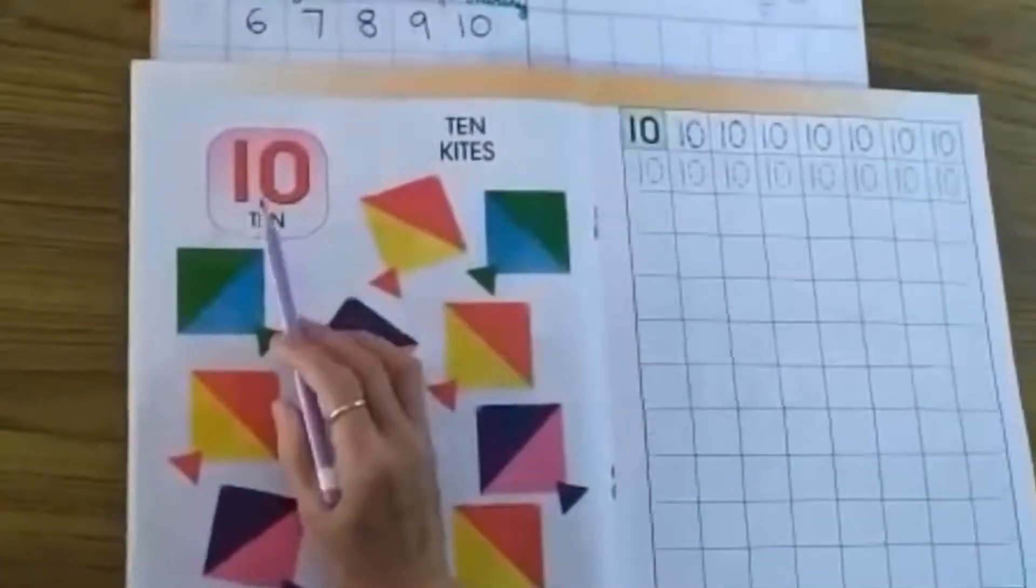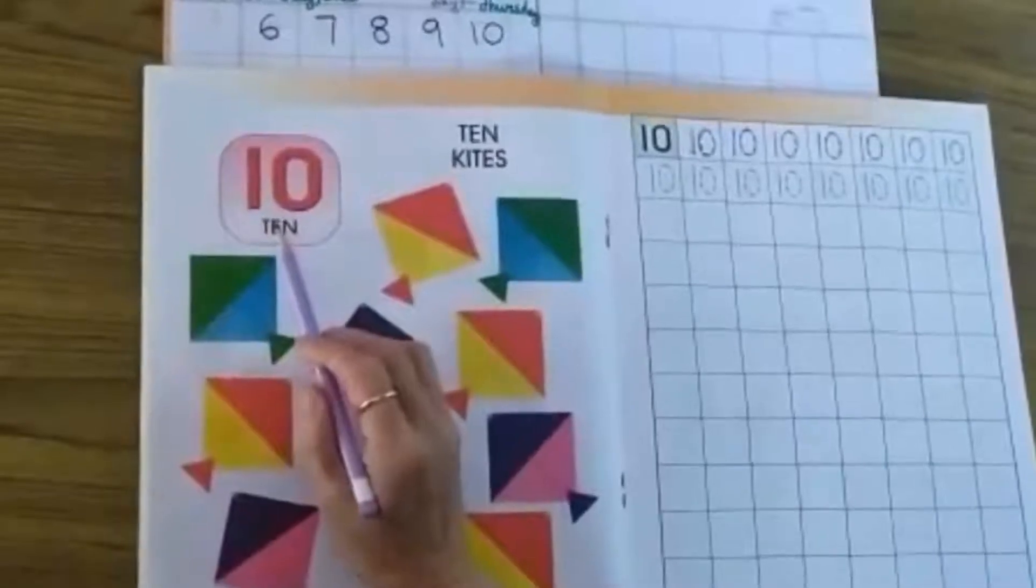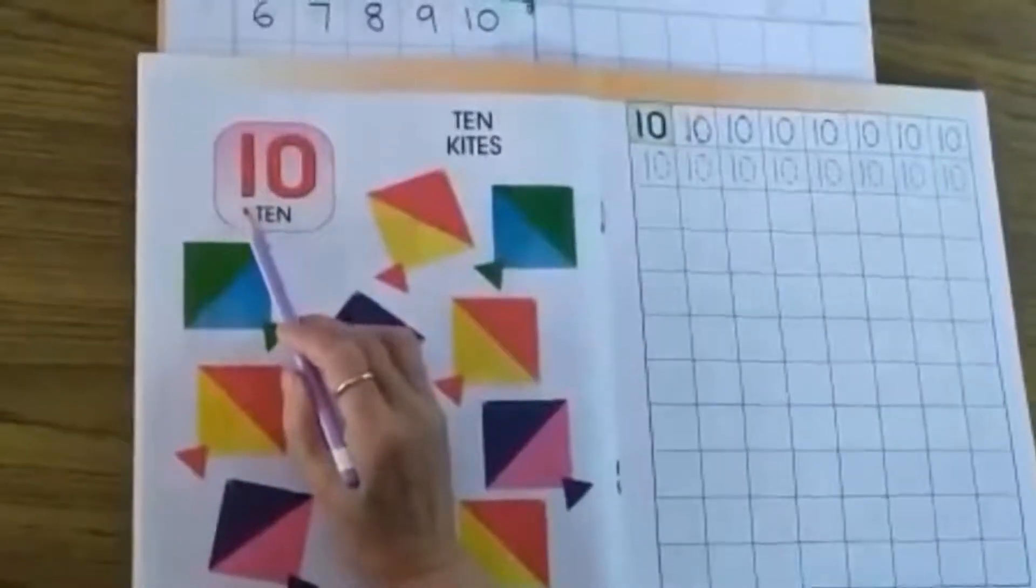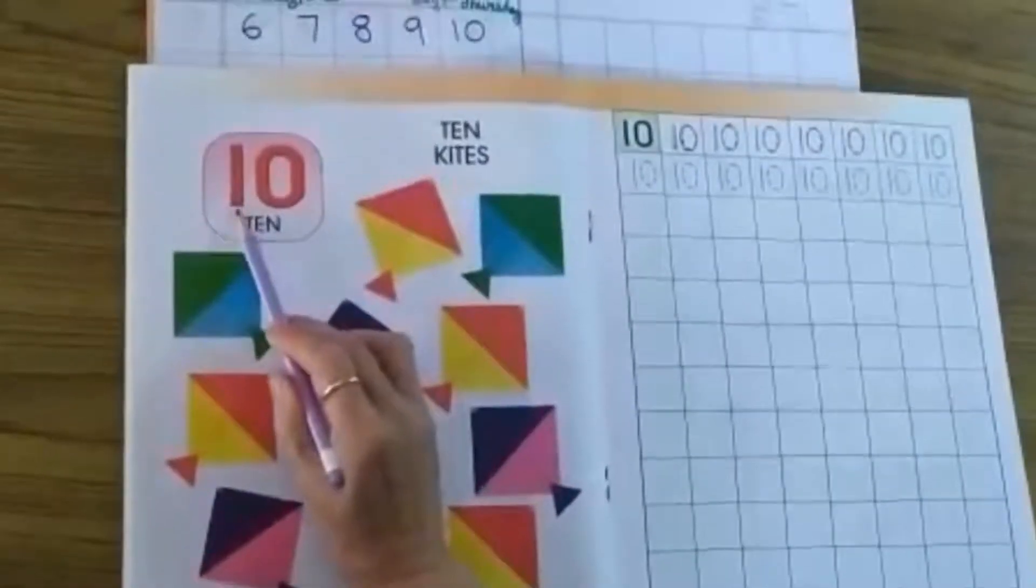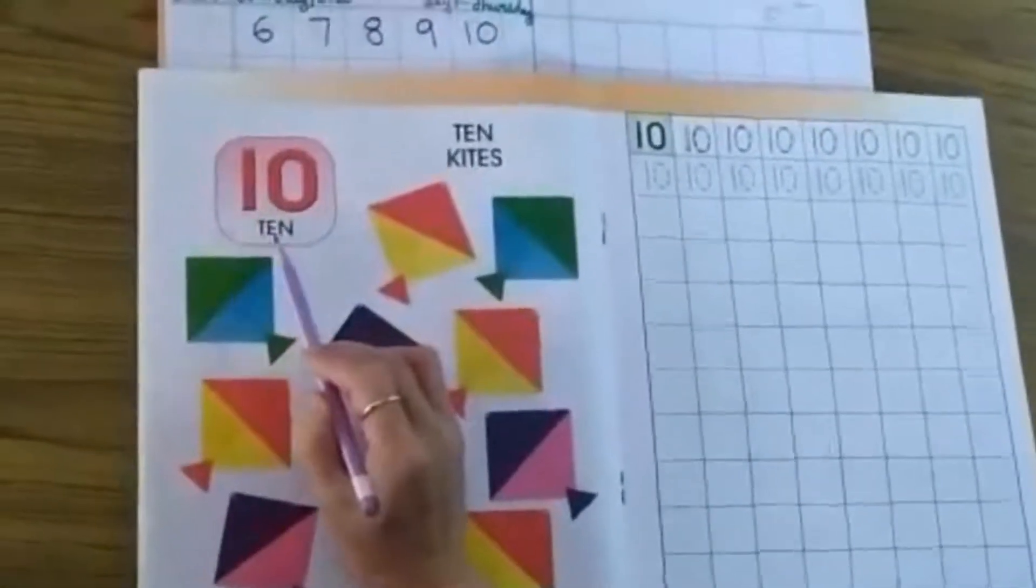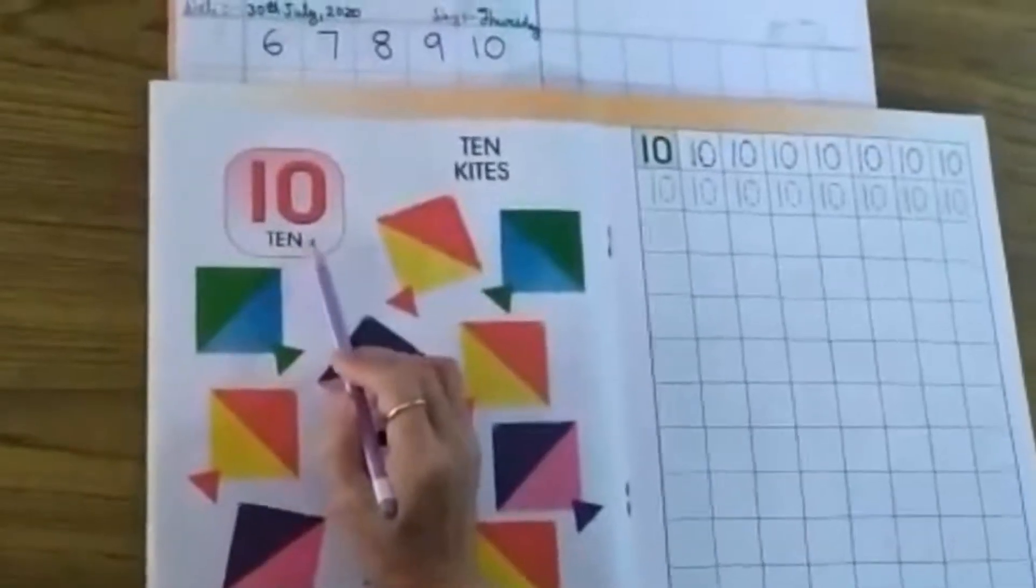1, 0, 10. Children you know how to write number 1 and 0. If you write 1 and 0 together then it is called 10.